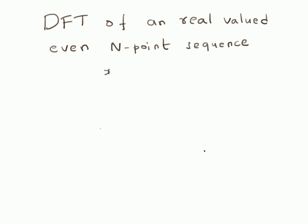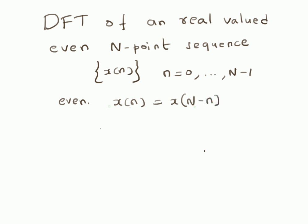Given a sequence x(n) where n is from 0 to N-1, that is an N-point sequence, it also satisfies the definition of even: x(n) is equal to x(N-n). That is the definition of an even function for N-point sequences. Given this sequence x(n) satisfying this definition and also being real-valued, we want to find out what is the DFT of such a sequence.